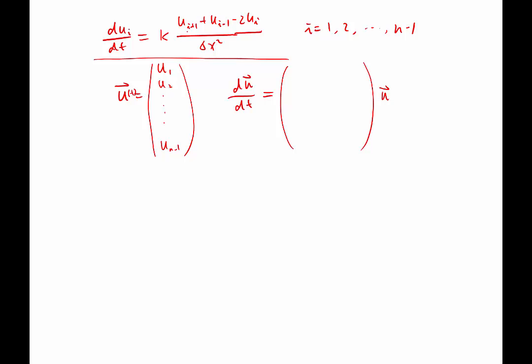And the matrix can be constructed by looking at the coefficients. For example, the diagonal entries of the matrix is the coefficients corresponding to the same ui as the i that appears on the left-hand side. That coefficient, kappa times minus 2 divided by delta x squared, is what is going to be appearing on the diagonal. And that is the same in this case for every diagonal element.